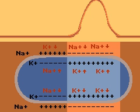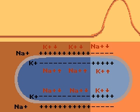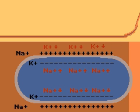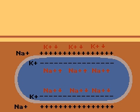After the impulse has passed, potassium ions leave the cell, restoring the negative charge within the cell and the positive charge outside it. While this resting situation is being restored, another impulse cannot be generated.